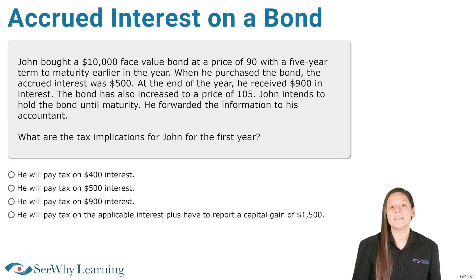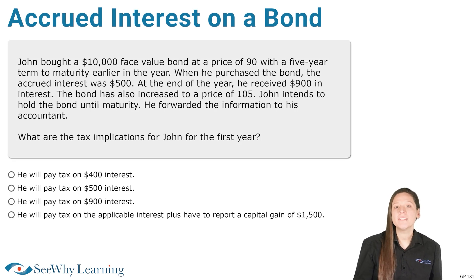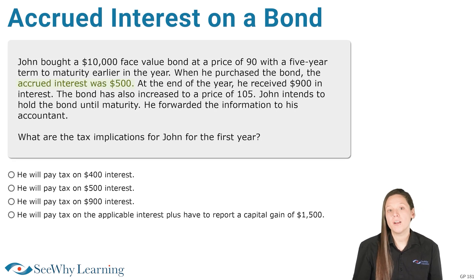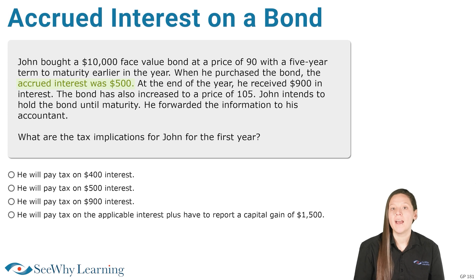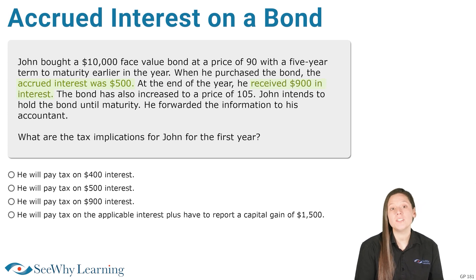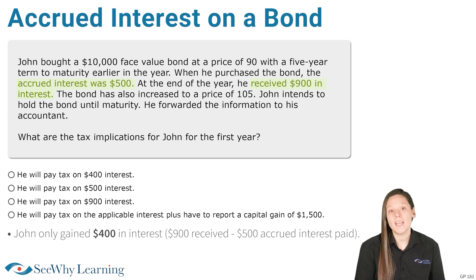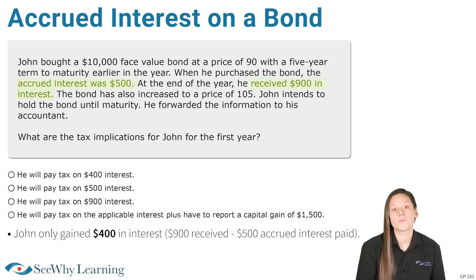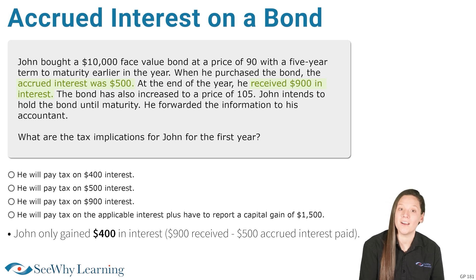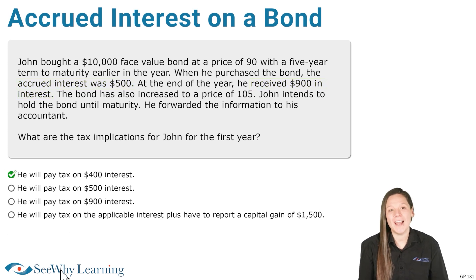That's what happened in this scenario. John paid the seller $500 in accrued interest when he bought the bond, and at the end of the year he received $900 in interest from the issuer of the bond. As you can see, John only gained $400 in interest, and that is what he would be required to report and pay tax on. We select that answer, and we are correct!